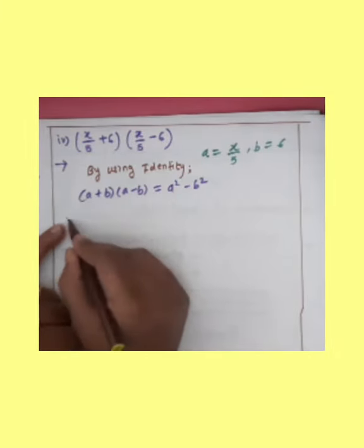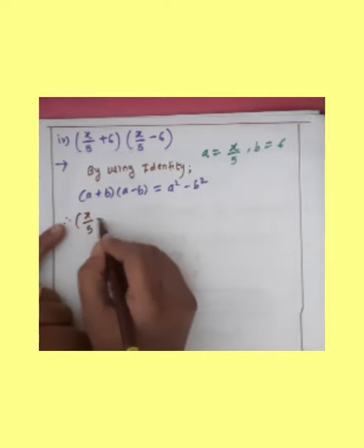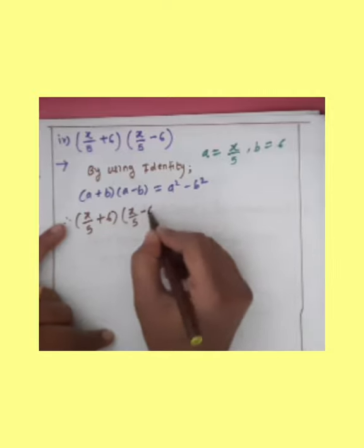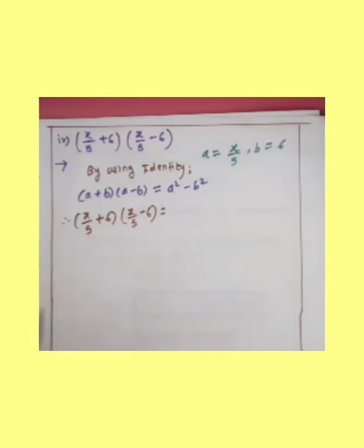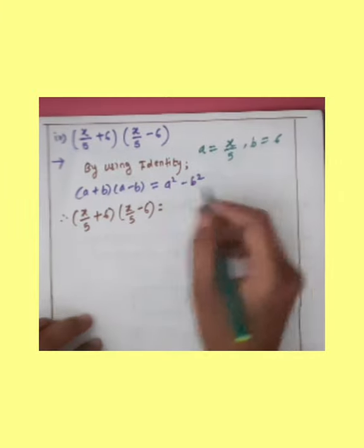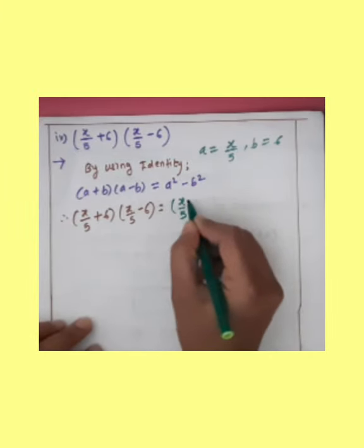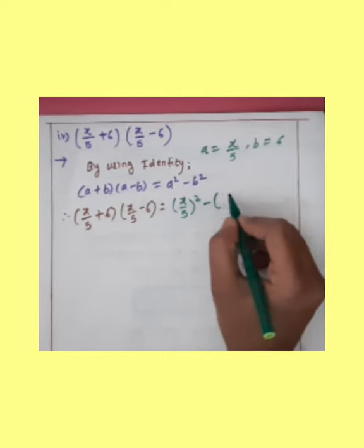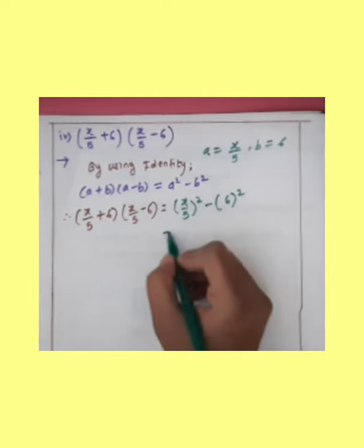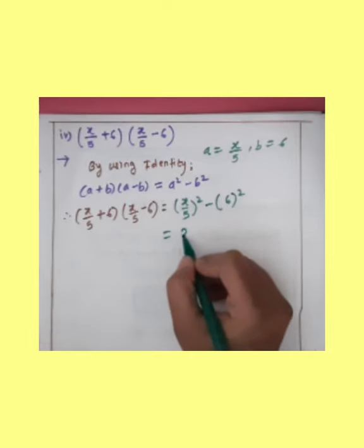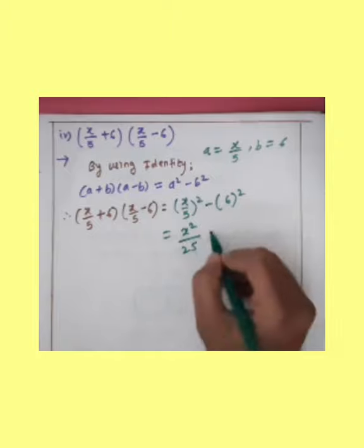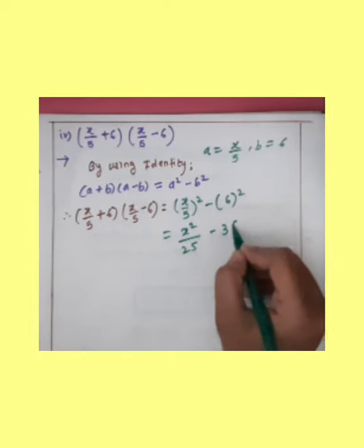A plus B — that is X upon 5 plus 6 — into X upon 5 minus 6 is equal to A square minus B square. A square is X upon 5 squared, then minus B square: 6 squared. So X square divided by 25 minus 36.